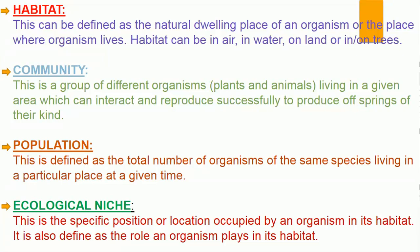Next is community. A community is a group of different organisms — plants and animals — living in a given area that can interact and reproduce successfully to produce offspring of their kind. When we say community, we are talking about different populations of organisms living and interacting together in an area. For example, where we have goats, cats, mosquitoes, microorganisms, humans, and plants all living in an area and interacting — that makes a community.